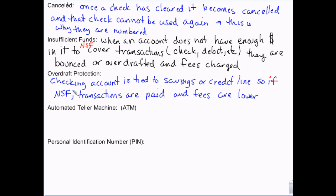If you have overdraft protection and insufficient funds, the bank pays the transactions out of your savings account or off your credit line, pays the difference, and charges you a small fee — which also gets charged to the checking, savings, or credit line account. So your bank account at that point would be zero, but it wouldn't be negative.